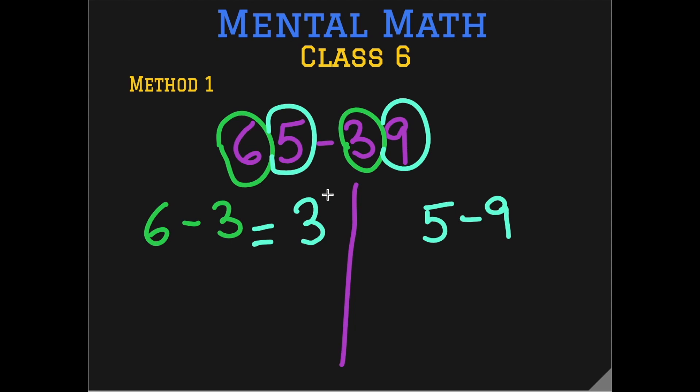So 6 minus 3 is 3. But it will not stay a 3 or in other words 30 because these are the tens that we are subtracting. We will need to borrow a 10 from this 30 and we will end up with 20 here. And we will give this 10 to 5. So it becomes 15. And then 15 minus 9. Again we know this kind of subtraction. So 15 minus 9 is 6. With practice obviously you will become fast with this but we need to borrow here. So the final answer is 26.